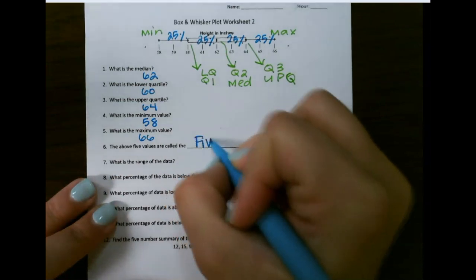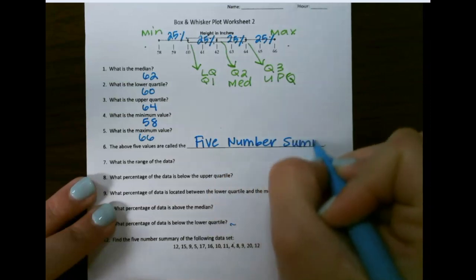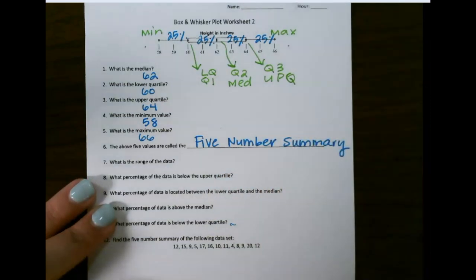These numbers are called the five number summary, and they are what creates your box and whisker plot.